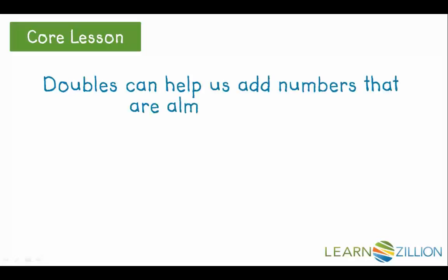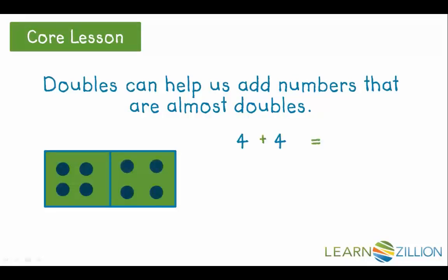Doubles can help us add numbers that are almost doubles. 4 plus 4 equals 8. What about 4 plus 5? It's just one more. 4 plus 4 and one more equals 9.